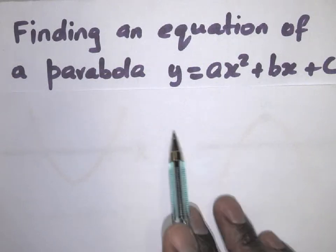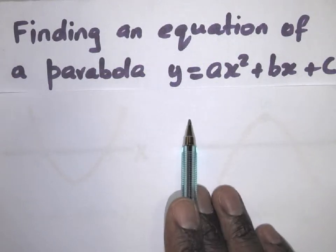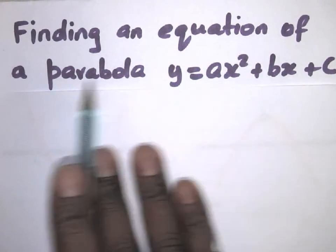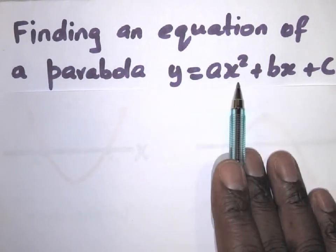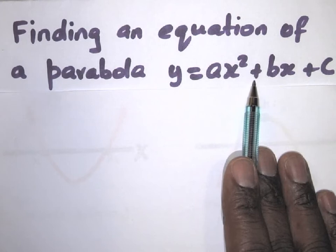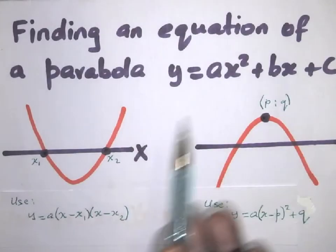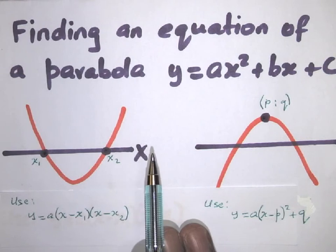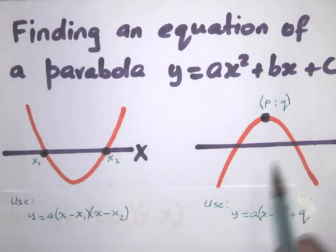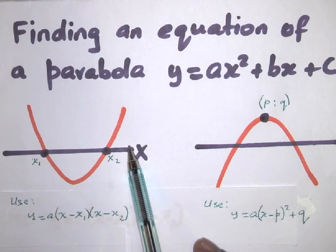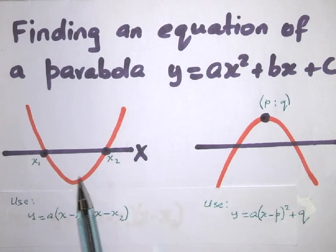In this video we're going to look at finding an equation of a parabola: y = ax² + bx + c. There is one parabola formula for when the parabola is cutting the x-axis, and another for when you are given the turning point.